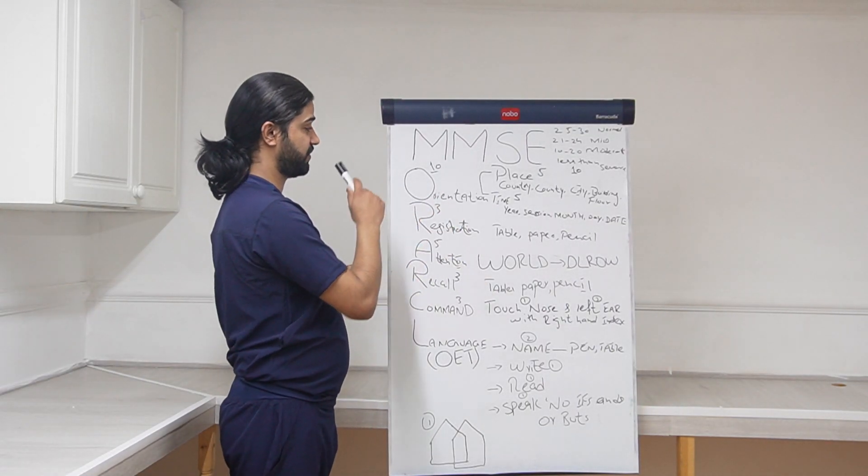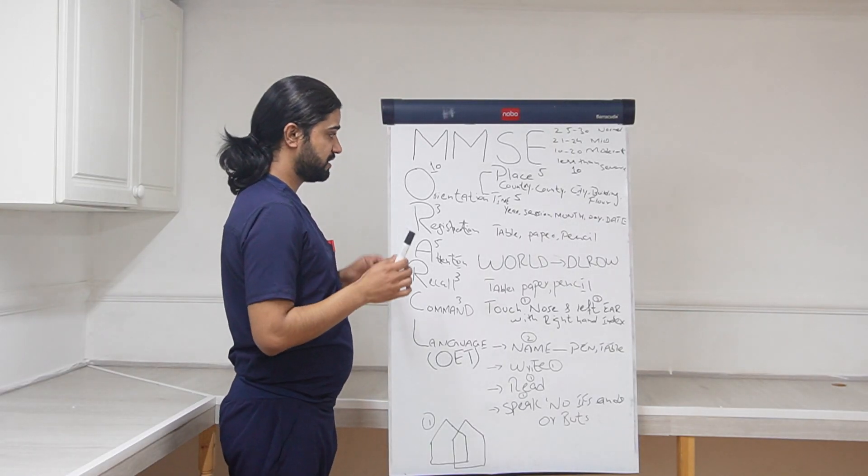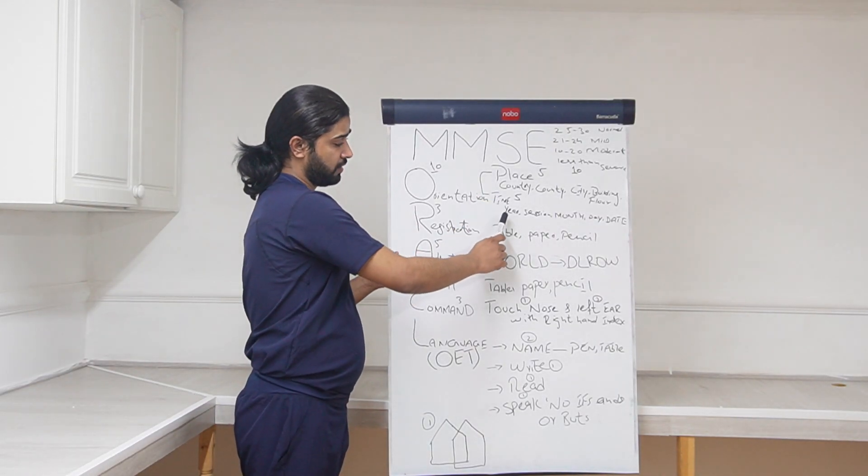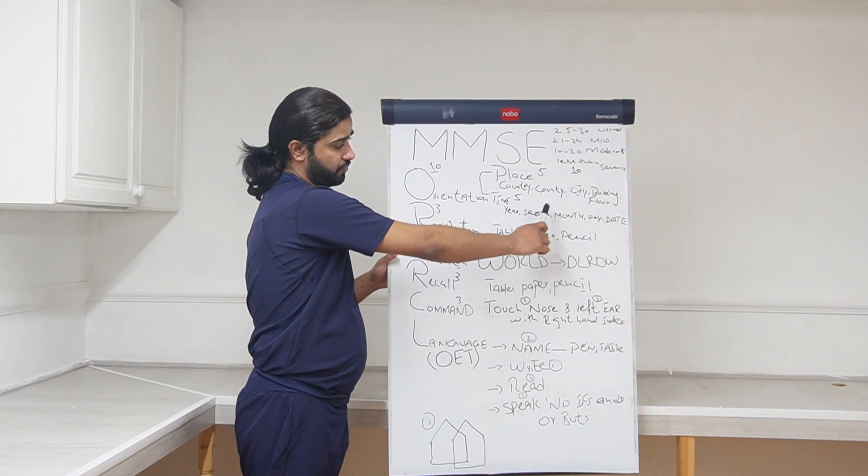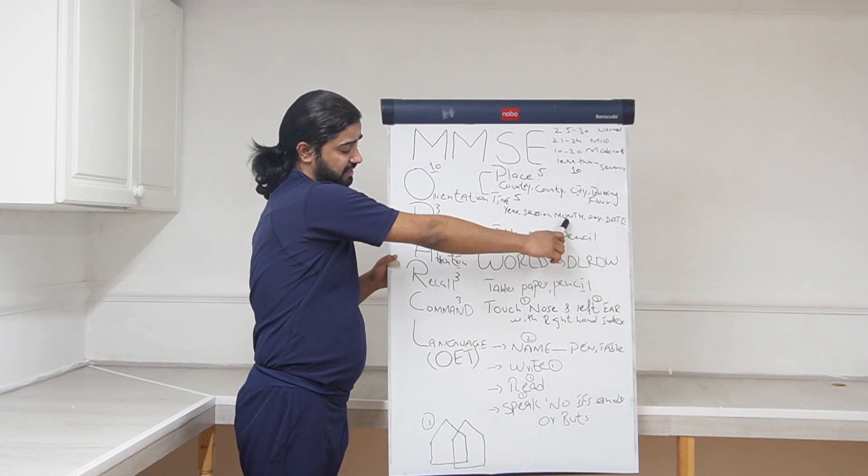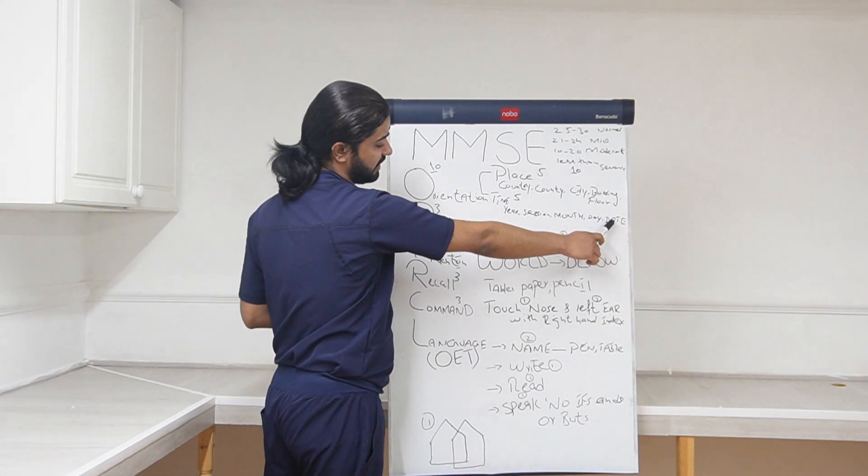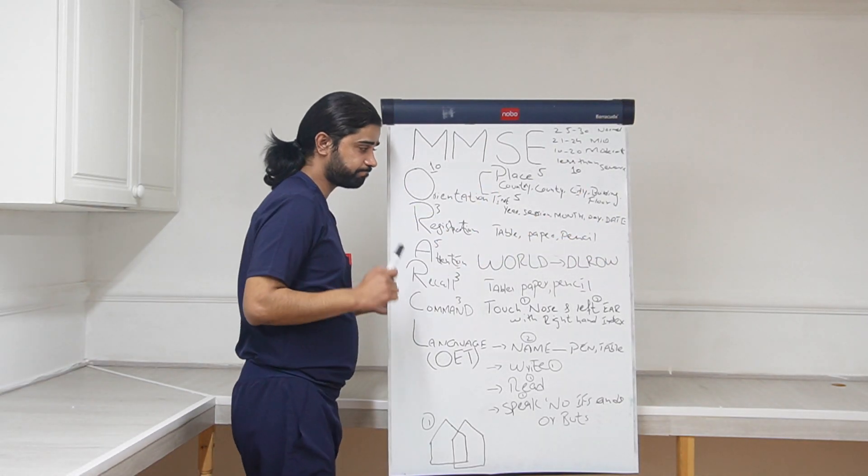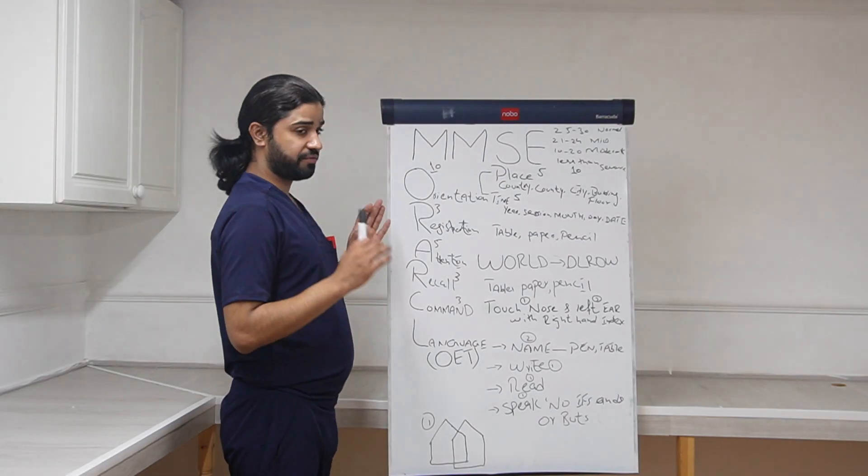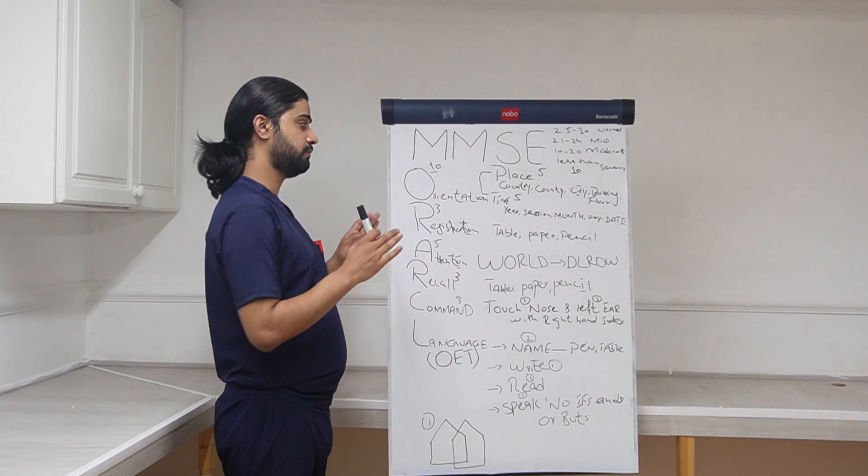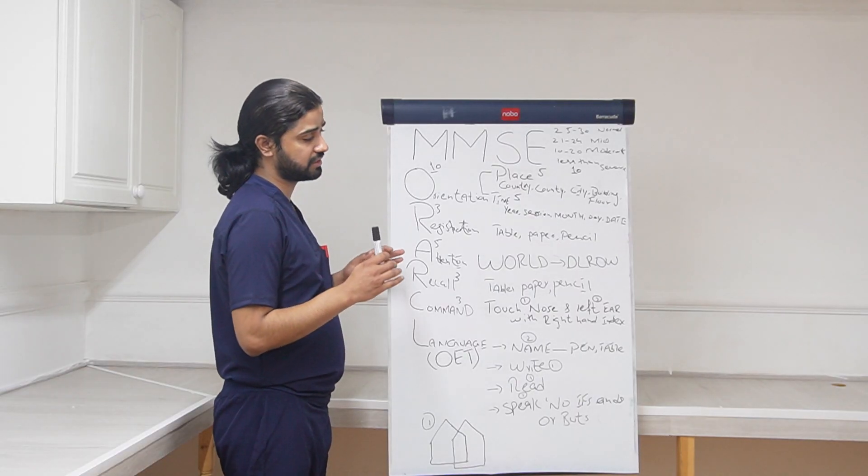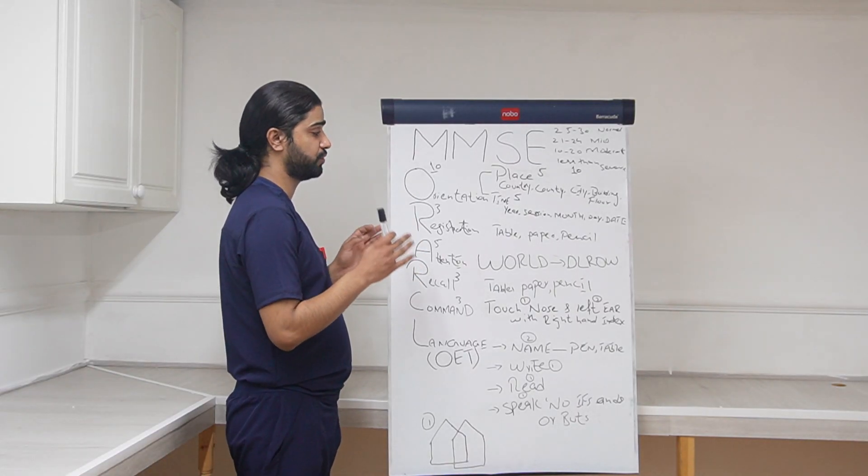Next is time orientation. Time orientation again, 5 questions, 5 marks. In which year we are, in which season we are, what is this month, then what is the day of the week today, and then what is today's date. 5 questions, 5 marks. Patient is able to answer all these questions, give him 10 marks. Not able to answer questions, just score him.